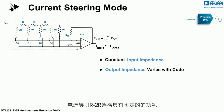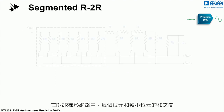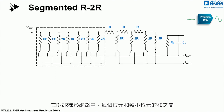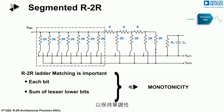This type of DAC offers a constant reference input impedance and an output impedance that varies with code. The current steering R2R architecture offers constant power consumption with variable noise and flexible current outputs at high speed. In an R2R ladder it is important to have very tight matching between each bit and the sum of the lower bits in order to maintain monotonic behavior. In a segmented design, these requirements are more relaxed.